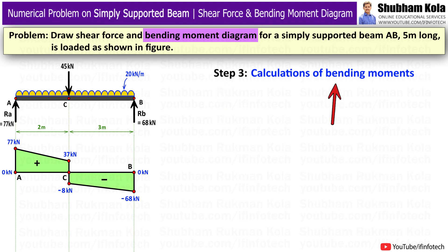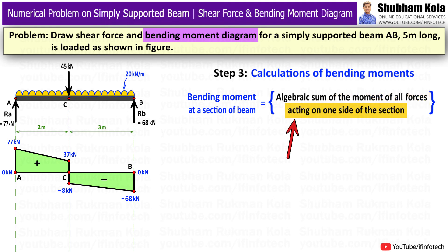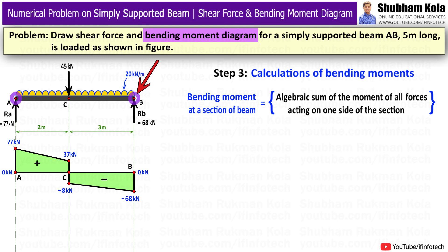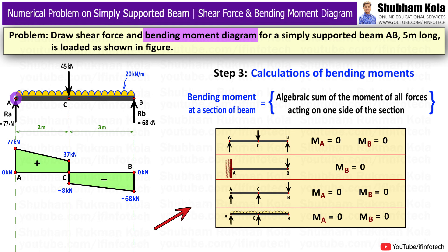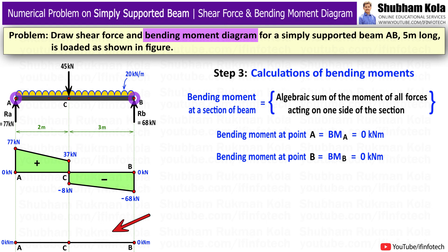The next step is calculation of bending moments. The bending moment at a section is the algebraic sum of moments of all forces acting on one side of the section. We can start from either the left or right end; here I start from the left. For a simply supported beam, the bending moments at the ends are zero — so bending moment at point A and at point B both equal 0. I draw the reference line of 0kNm and mark these values on it.